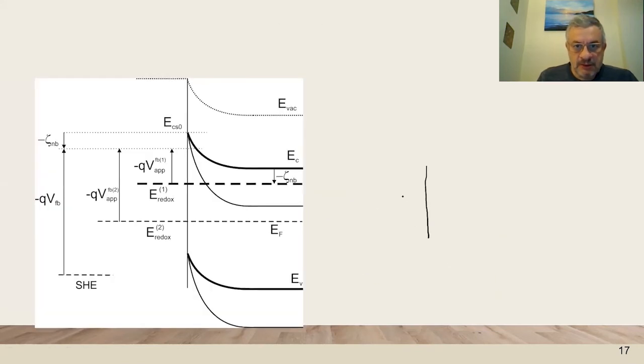Here we can do the corresponding to the change of the work function of the metal. Here we can change the redox energy in the electrolyte, and if we change the electrolyte and make a higher one then this will come to the other equilibrium and we will have a reduction of the interfacial barrier.